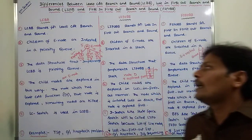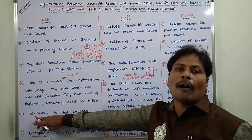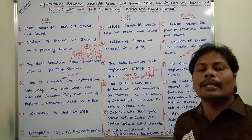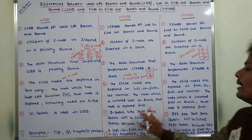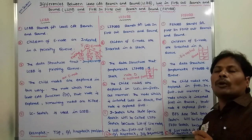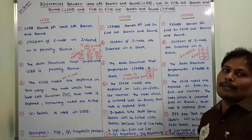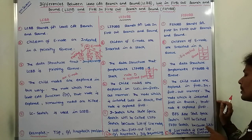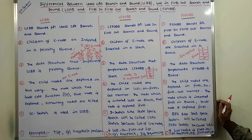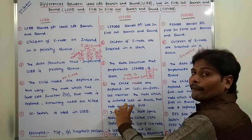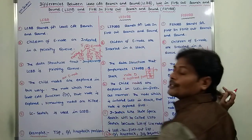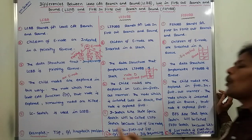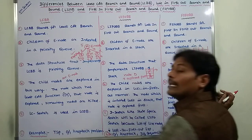Fifth point: the search technique used. In LCBB, least cost search (LC search) is used — we always search for the node that has the least cost in the state space tree. In LIFOBB, depth first search (DFS or BFS) is used. In FIFOBB, breadth first search (BFS) is used to explore the nodes in the state space tree.